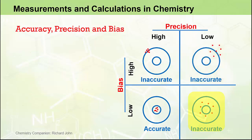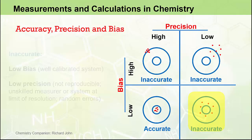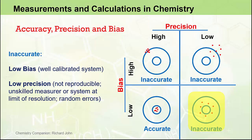The situation at the bottom right is also inaccurate. This represents a situation of low bias — which is a good thing — but poor reproducibility or low precision. The gun sights are likely well calibrated but the marksman is not well skilled and is shooting randomly all over the place. Relating this back to measuring, this is indicative of a well calibrated measuring system but perhaps an unskilled measurer due to a lack of reproducibility, or perhaps the system is being used at the limit of its resolution and random errors are introduced.